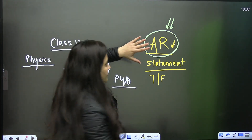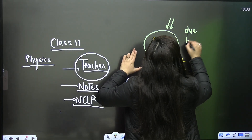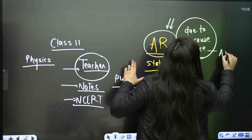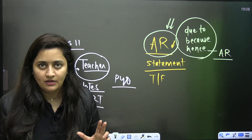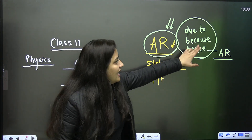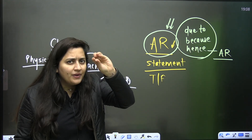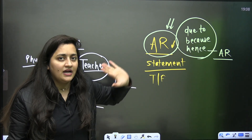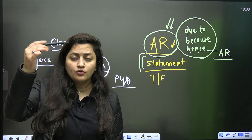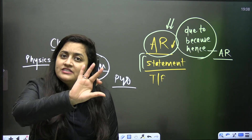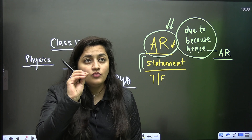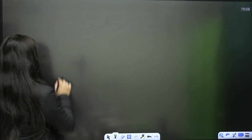While reading a chapter, wherever you find words like 'due to,' 'because,' or 'hence,' assertion-and-reason questions can come from such statements. You can check your previous year papers and see that wherever due to, because, hence — such words are given — assertion and reason usually come from that part. For statement-based questions where you have to select more than one statement, read the NCERT carefully. I'll give you one example from Animal Kingdom.